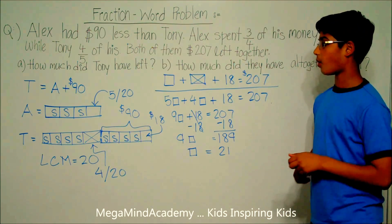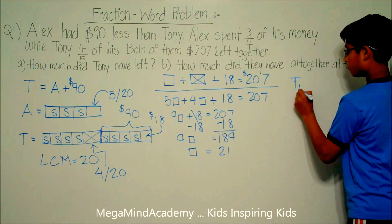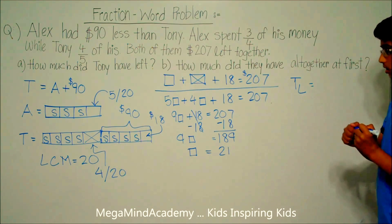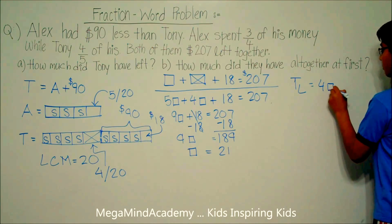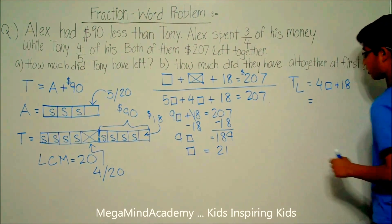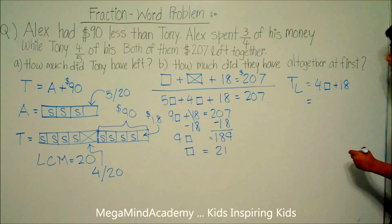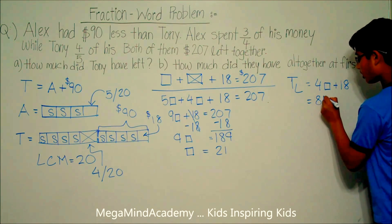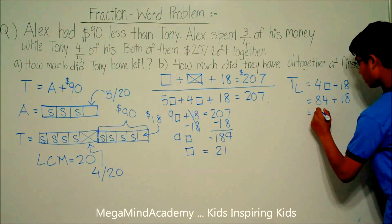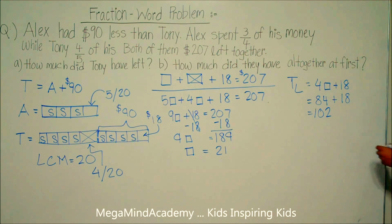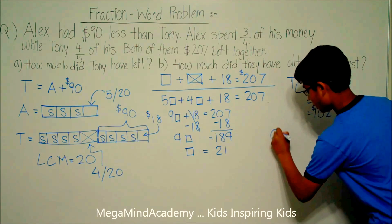The question asks: how much did Tony have left? Tony left equals 4 units plus $18. That's 4 times $21, which is $84, plus $18, which equals $102. So Tony had $102 left. The answer to question A is $102.